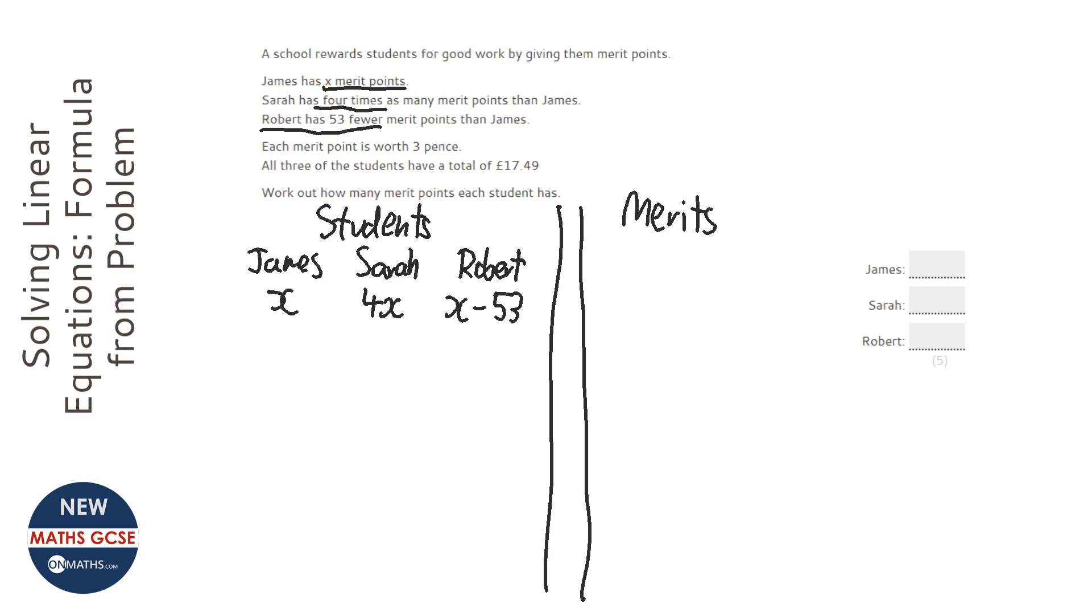Next thing I want to focus on is the merits. It says the merits are worth that amount in total, and each merit is worth that amount. So what I'm going to do first of all is convert that into pence. So we've got 1749 pence. And if each of them is worth 3 pence, I can divide it by 3 to work out how many merit points.